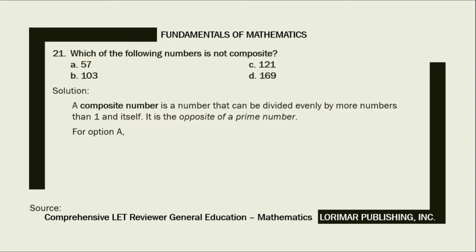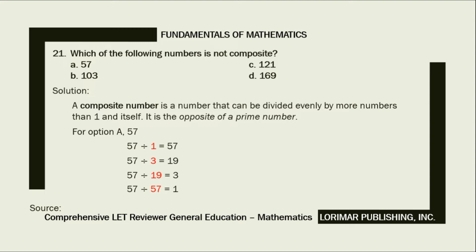For option A, 57 can be evenly divided by 1, 3, 19, and 57 with no remainder. Since 57 cannot be divided by just 1 and 57, it is a composite number.